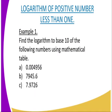Then we go to the logarithm of positive numbers less than 1 and also positive numbers greater than 1. The first question is to find the logarithm to base 10 of the following numbers using the mathematical table. Question 1A is 0.004956, the second is 7945.6, and the third is 7.9726.